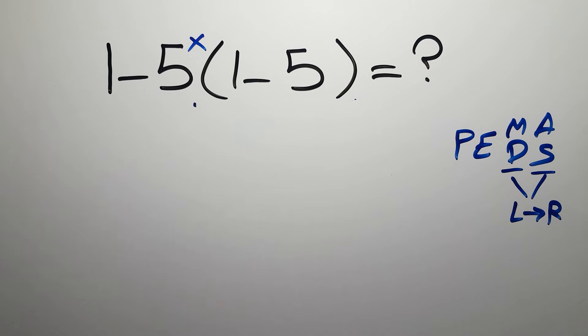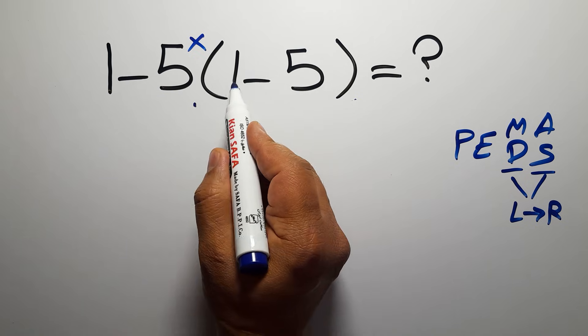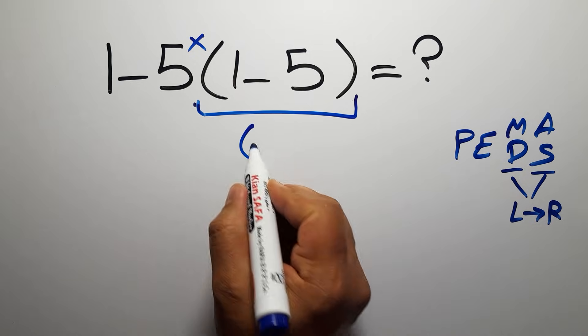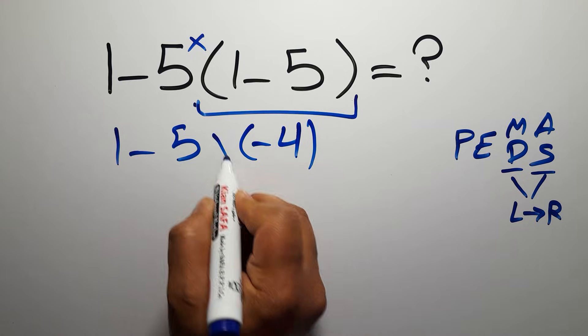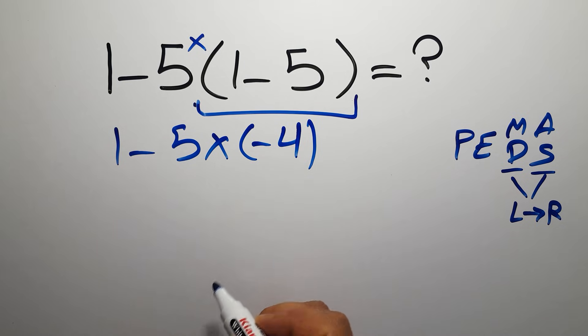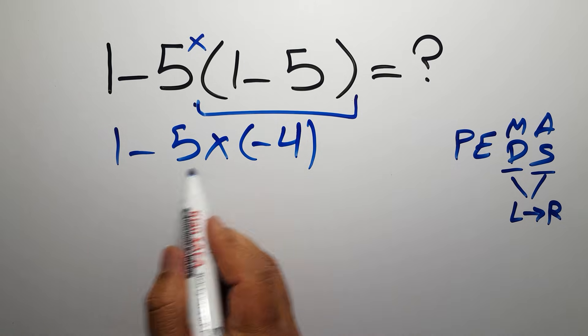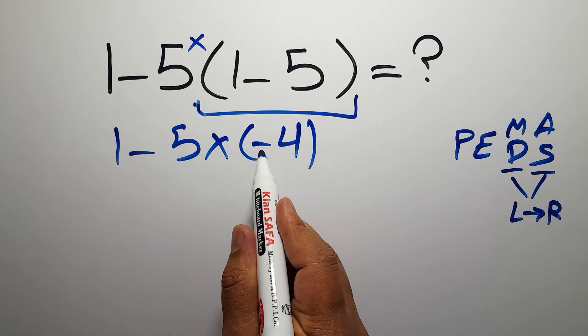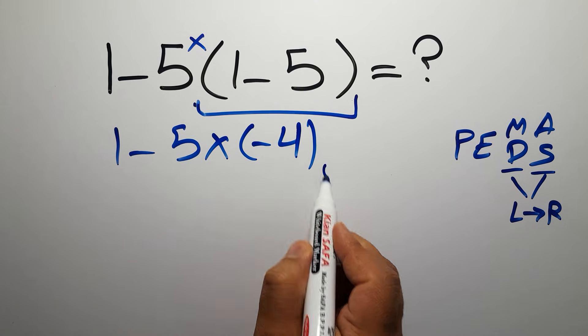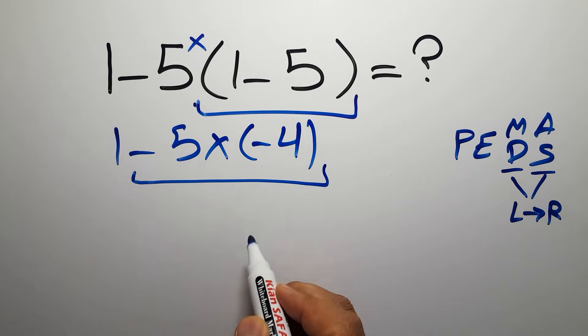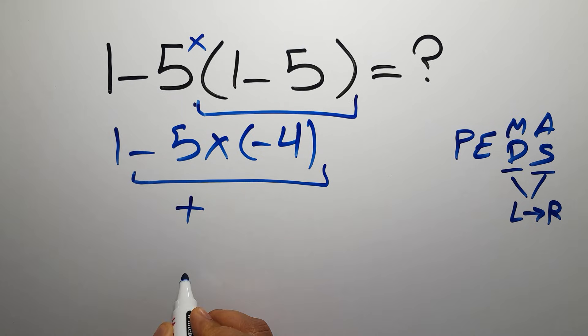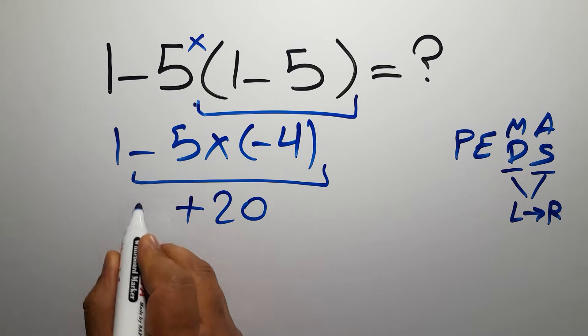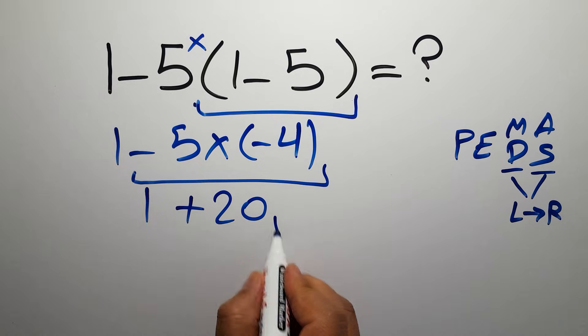First, the parentheses: inside we have 1 minus 5 which gives us negative 4. So we have 1 minus 5 times negative 4. Now we do the multiplication: negative 5 times negative 4 gives us plus 20. So 1 plus 20 gives us 21.